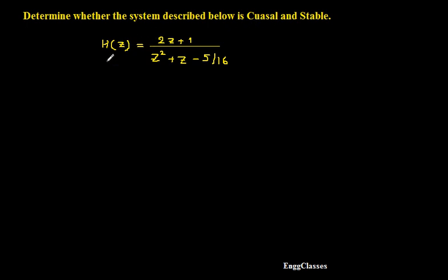The system is described in terms of its transfer function: H(Z) = (2Z + 1) / (Z² + Z - 5/6). We need to determine whether it is both causal and stable. To discuss the properties of the system, the first thing is to arrange the numerator and denominator as a product of terms — only then can we talk about causality and stability by considering the poles and zeros.